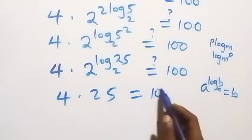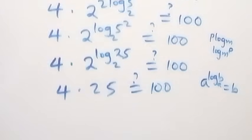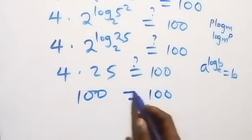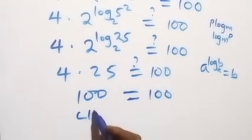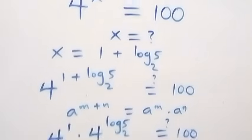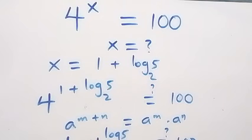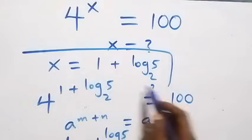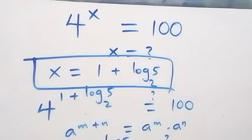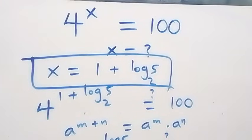And indeed 4 times 25 is 100, which equals 100 on the right-hand side. Left-hand side equals right-hand side, so we conclude that x equals 1 plus log 5 to base 2 satisfies the given problem. Thank you for watching — don't forget to subscribe, turn on notifications, share the video, give it a thumbs up, and leave your comments. See you next class!